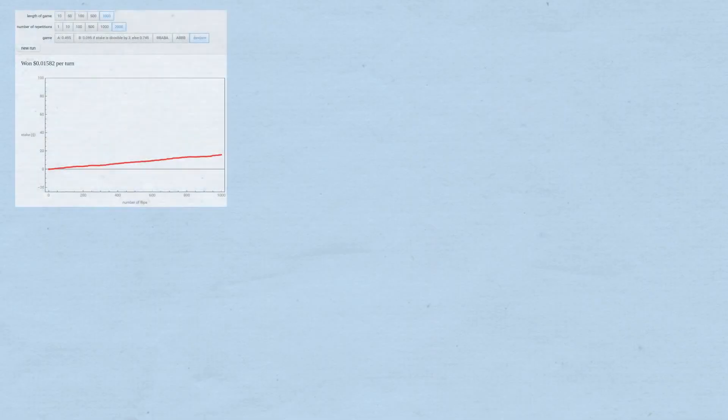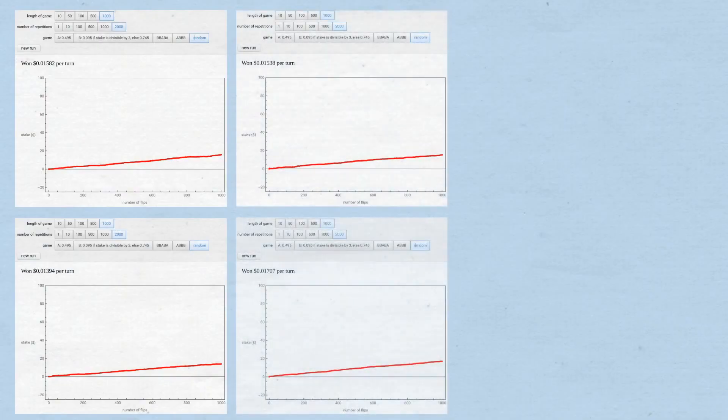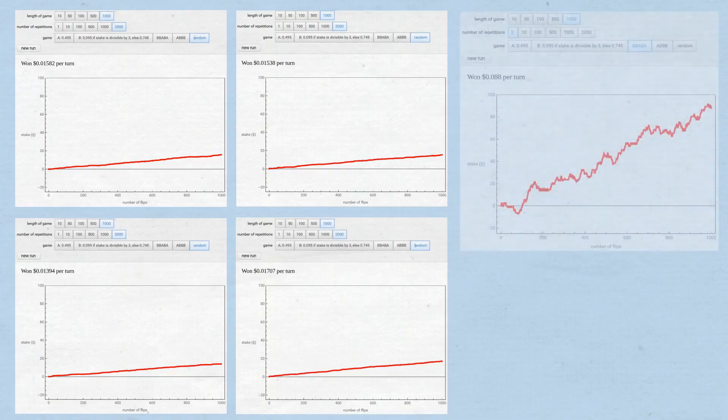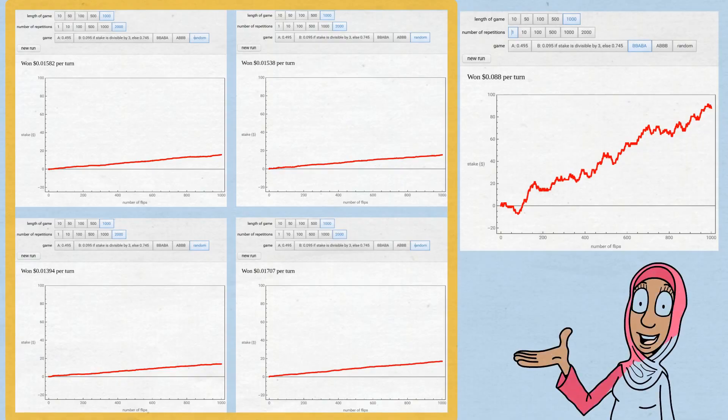But when you run 2,000 simulations of 1,000 games each, a clear pattern emerges. There's a definite upward slope in profits over time. The random alternation doesn't win as much as a carefully orchestrated strategy, but it consistently wins despite having no plan, no specific pattern, and no deliberate exploitation of the game's mathematics. Randomly alternating between two losing games yields long-term profits.